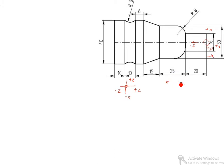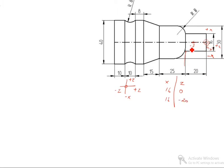We will start — X is at value 16. Z is 0, so you can start at 0. After that, you see up to here is 16. This value is 20, so you can write 16 minus 20. Z is minus 20. Up to here we finished.